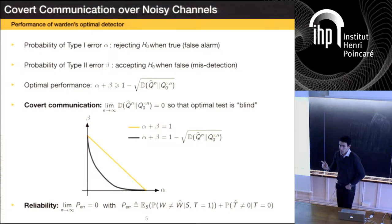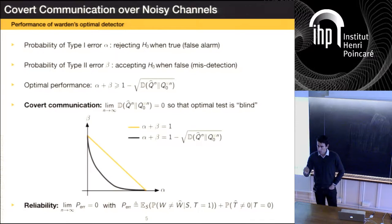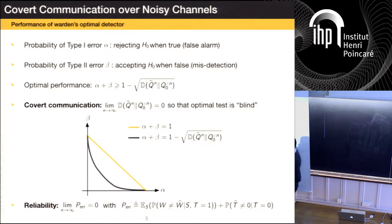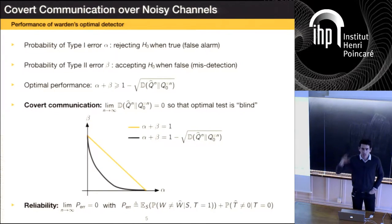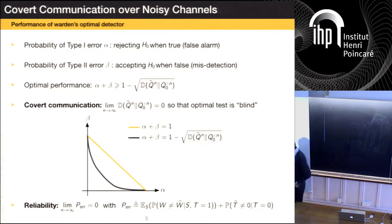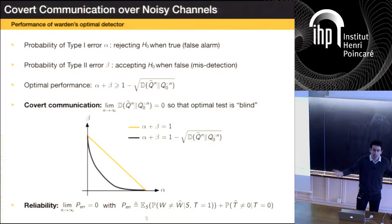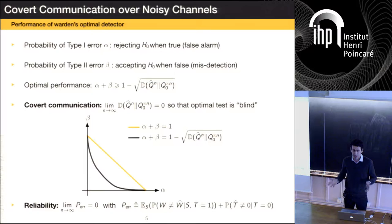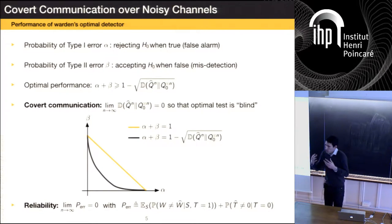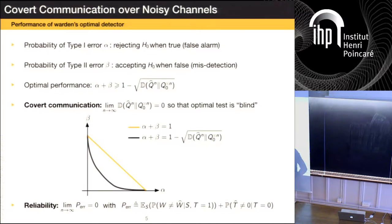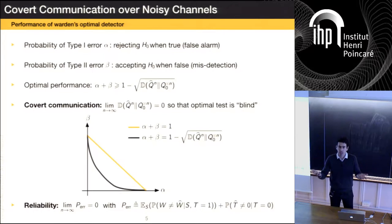What we're guaranteeing is that any statistical hypothesis test built by the warden can be no better than a dumb statistical test. The tradeoff α + β = 1 can be achieved by a completely blind test not even looking at the channel output. My whole point is: I'm not going to prevent you from saying I'm communicating — I'm going to prevent you from proving I'm communicating. This is essentially what Sid called deniability: if I operate in a regime where your test has performance on the diagonal curve, I can deny I communicated because you cannot prove it with a meaningful statistical test.